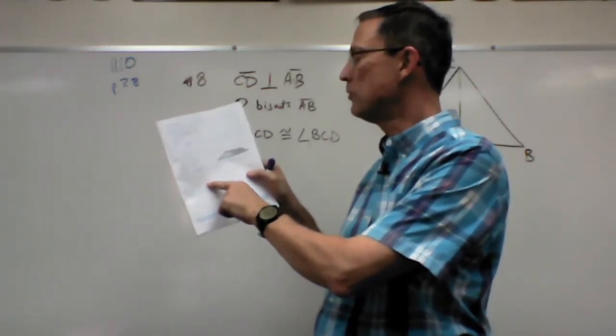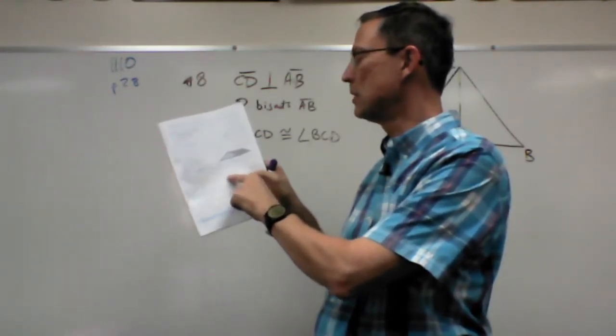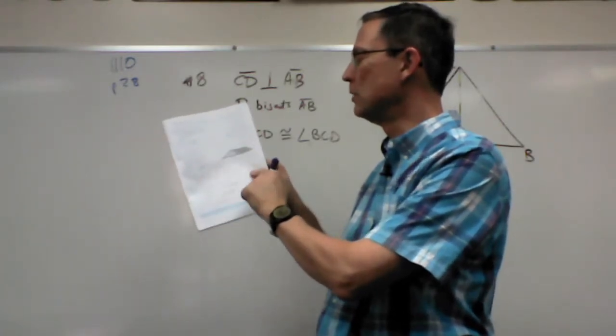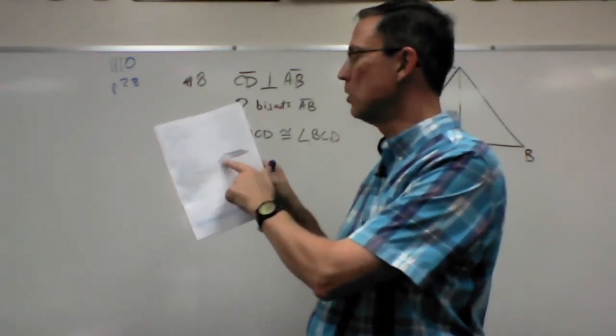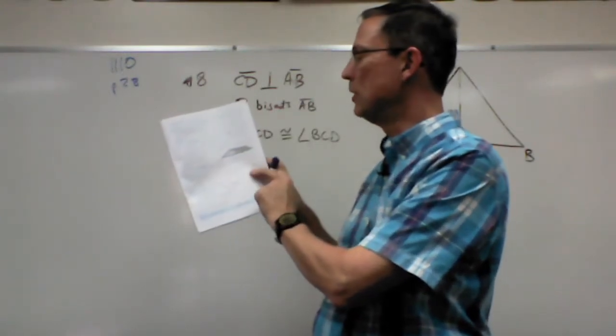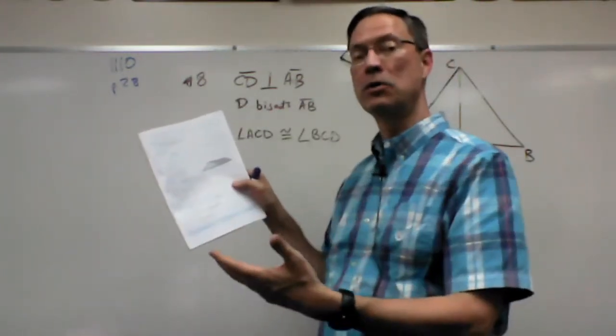So we have to first prove that they, because the reflexive will tell us that this other leg is congruent. So then we'll have these two legs down here congruent, this leg congruent, and we have right triangles.